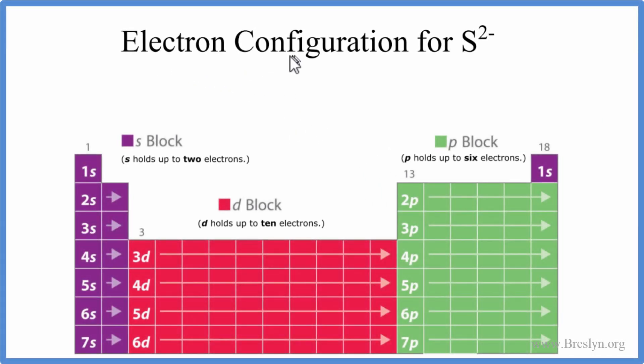In this video, we'll write the electron configuration for S2 minus. That's the sulfide ion. Before we do the electron configuration for S2 minus, let's do it for the neutral element S, as it's found on the periodic table. So S on the periodic table, in fact all of the elements on the periodic table, are neutral.